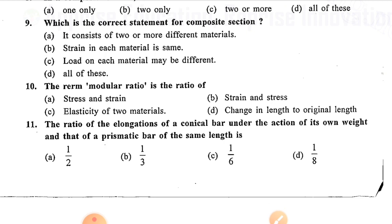Question number nine: Properties of a composite section — option A: it consists of two or more different materials; option B: strain in each material is same; option C: load on each material may be different; option D: all of these. Option D is correct — all of these.